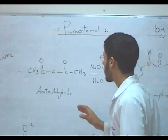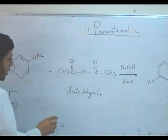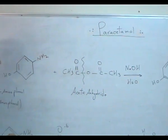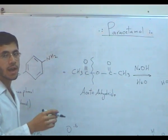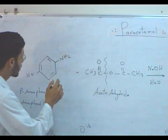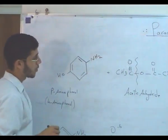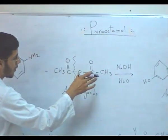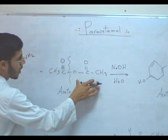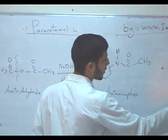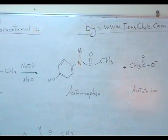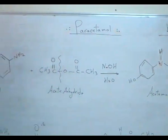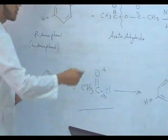Particularly in this reaction, we can see that half of the acetic anhydride has been reacted with para-aminophenol. One half is used and the other acts as a nucleophile, which yields the acetate ion as a byproduct. And that is a problem.